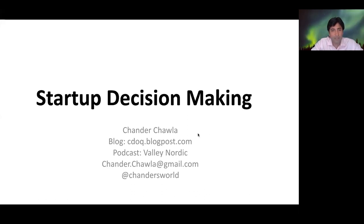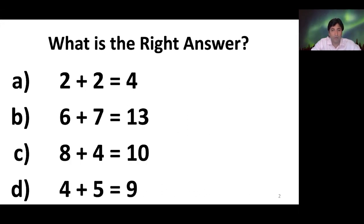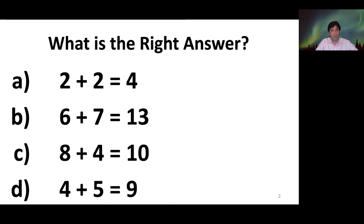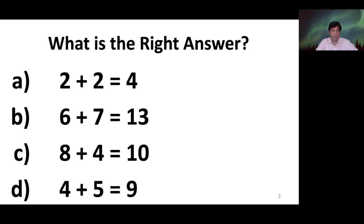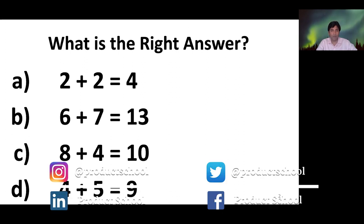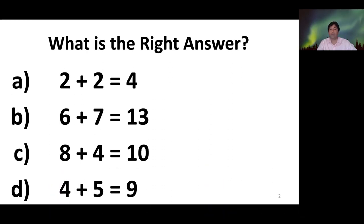Before we get started, let's do a quiz to set the frame for discussion. If you look at the slide here, there are three options. Generally when I do this presentation live, most people say C is the wrong answer and A, B, and D are the right answers. We assume, because we mainly deal with base 10 arithmetic, that anything that doesn't fit that frame is wrong. So C is right if you use base 12 addition. Base 10 is A, B, and D. C is using base 12.